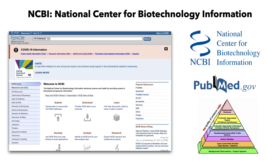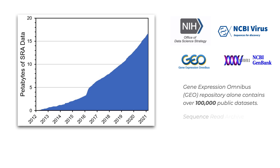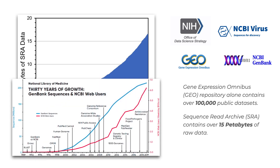Where can you find data on such projects? One repository that we will explore together is maintained by the National Center for Biotechnology Information, or NCBI. In the past several years, this database has been growing exponentially, and today there are over 100,000 publicly available datasets in just one part of NCBI called GEO, which stands for Gene Expression Omnibus. There are also over 15 petabytes of raw sequence archives, and an exponential growth of GenBank sequences representing over 5 million different organisms.